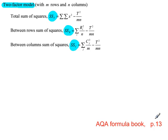From the formula book on page 13, for the two-factor model, two-way ANOVA test, we need to work out the sum of squares for the total, the rows, so that's for the fertilisers, and the columns, that's for the varieties.